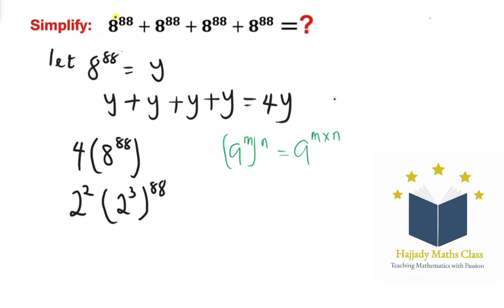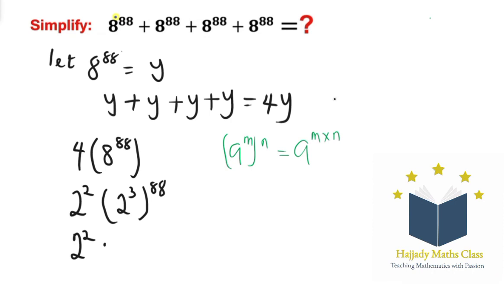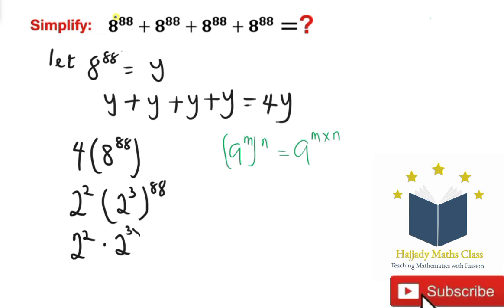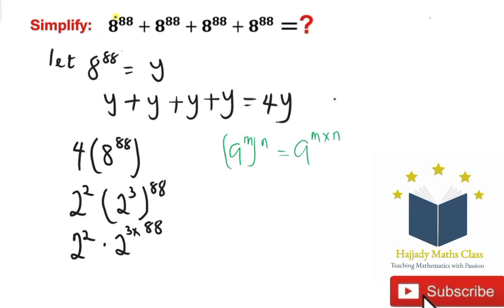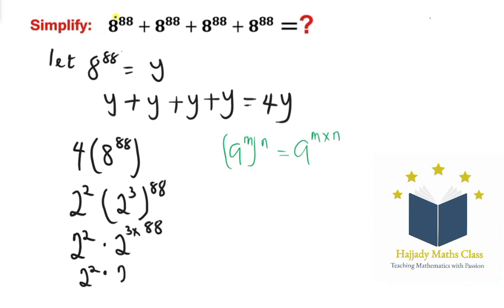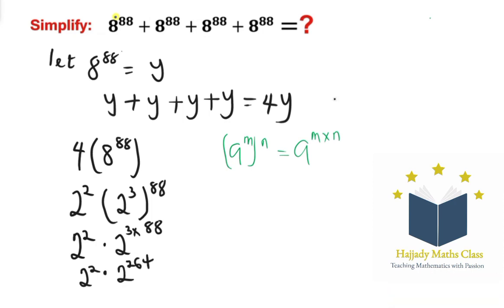Using that rule here, I'm going to have 2 to the power of 2, multiplied by 2 to the power of 3 times 88. This is the same as saying 2 to the power of 2, times 2 to the power of 264.